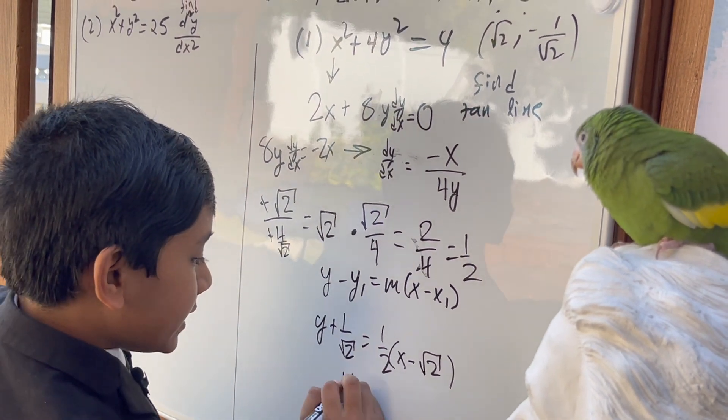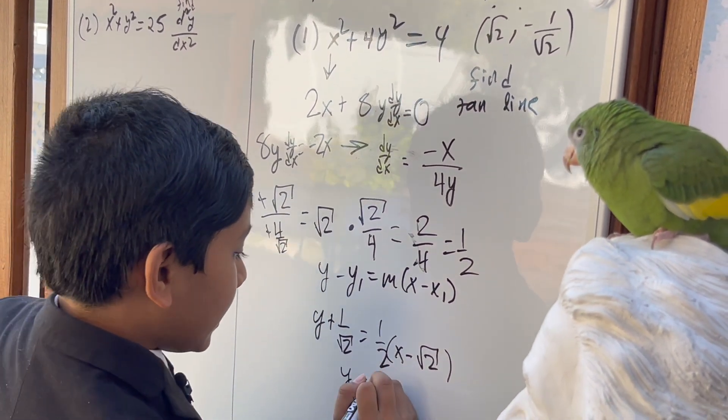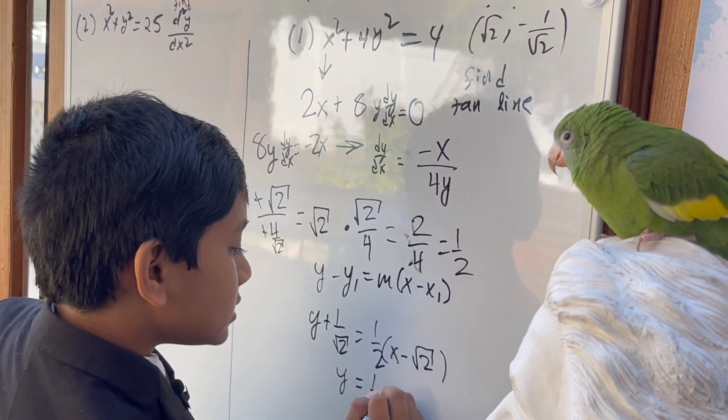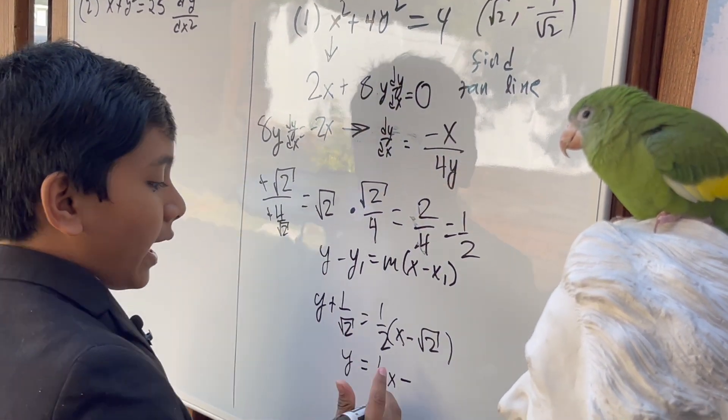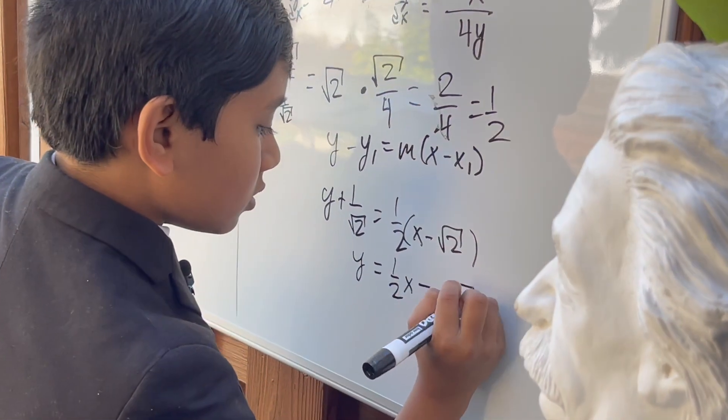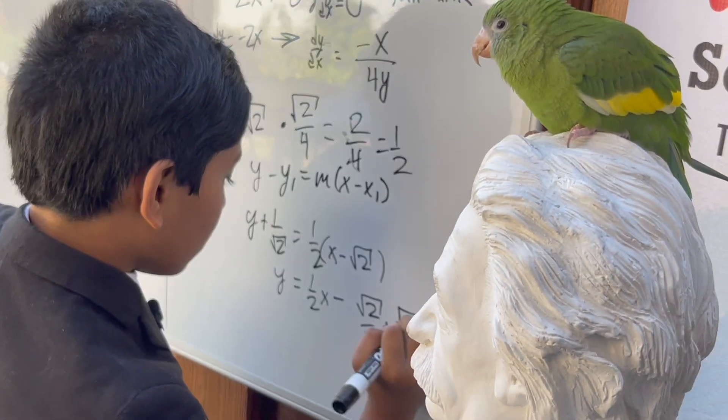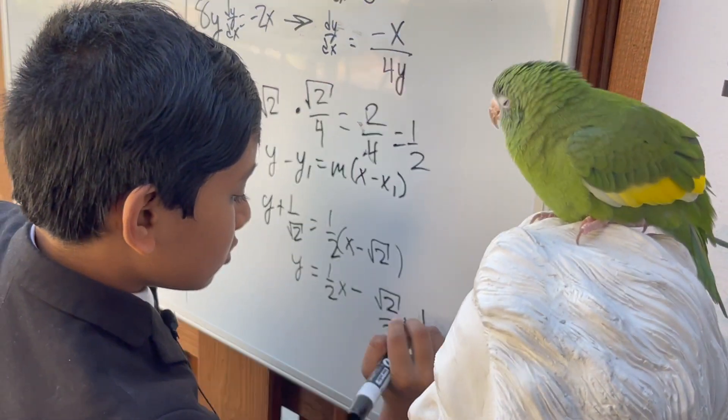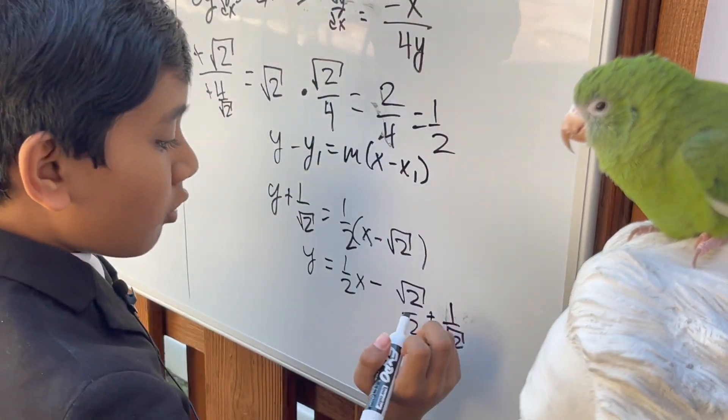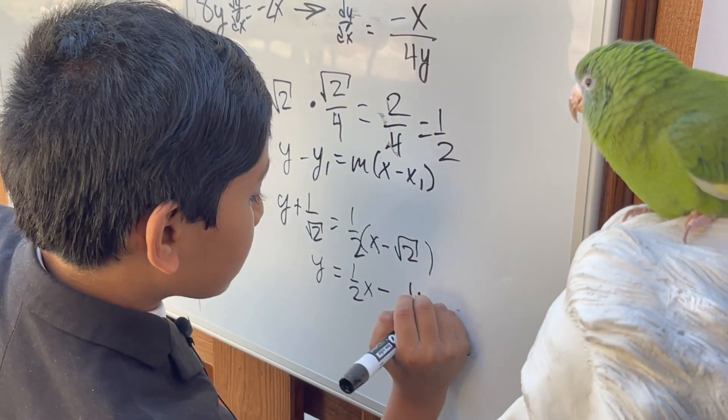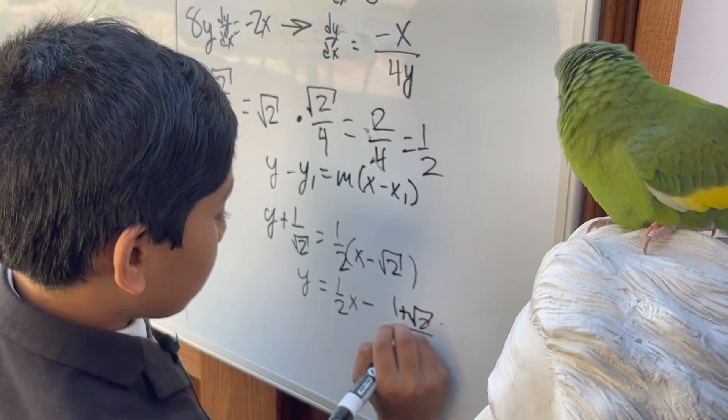So, that means the answer is 1/2 x minus 1/2 √2, plus √2, or 1 over √2. Or, in other words, 1 plus √2 over √2.